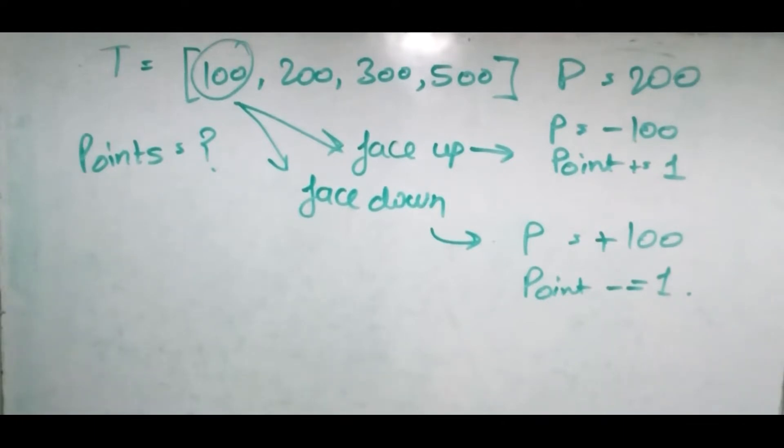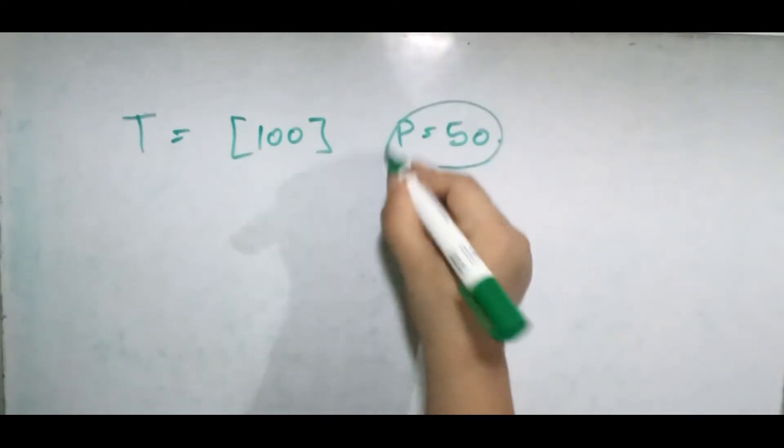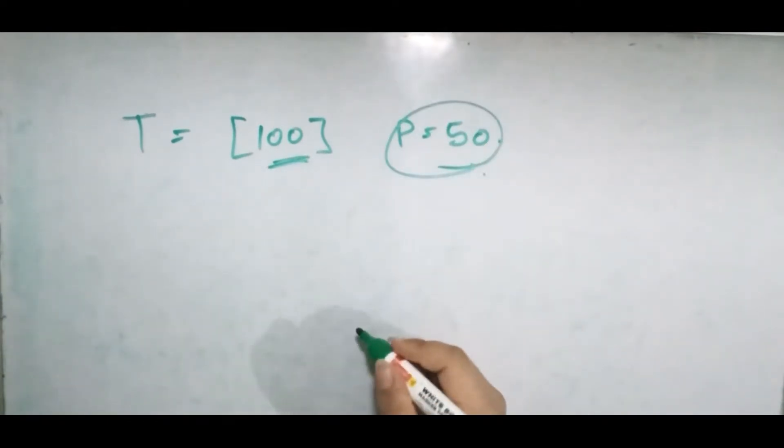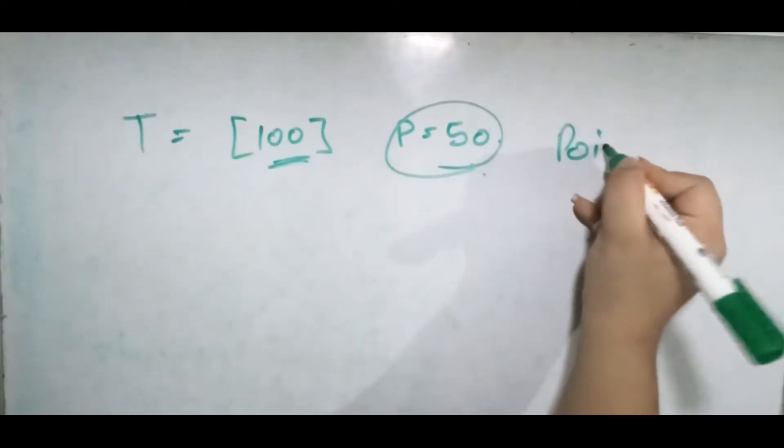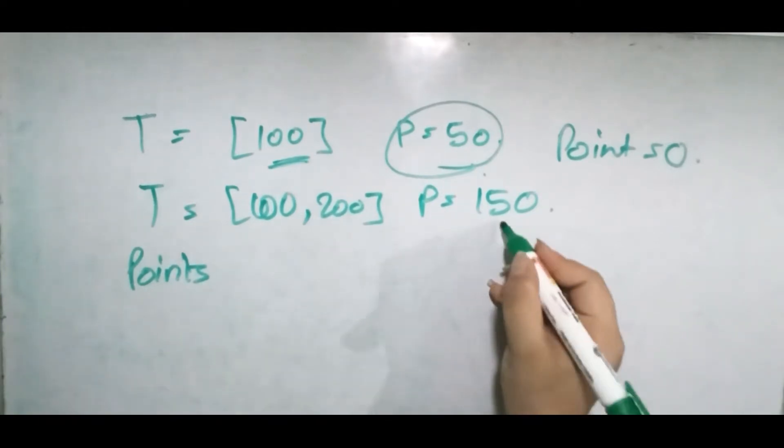So let's see, for this example we have power 50 and our token requires 100. Our points are zero. Now our power is 50.